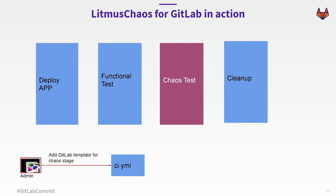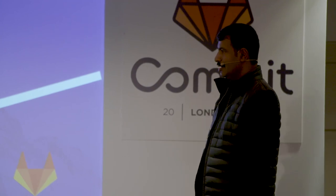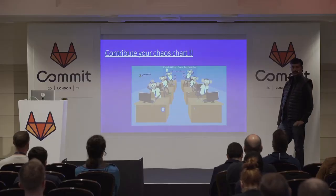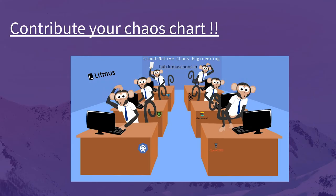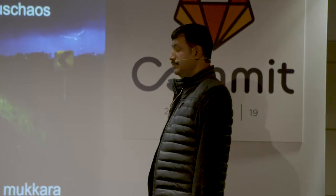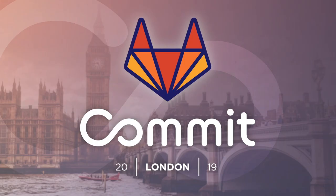That brings us to almost the end. We're all about open source — please try them, criticize them, get benefited. If you're a GitLab user, contribute more templates to Litmus. Hopefully in your application, you're going to create more chaos charts and contribute back to the Chaos Hub. Please make use of the three open source projects: GitLab, OpenEBS, and Litmus. Thank you! That brings us to the 20 minutes, hopefully. I am now ready to take some questions.